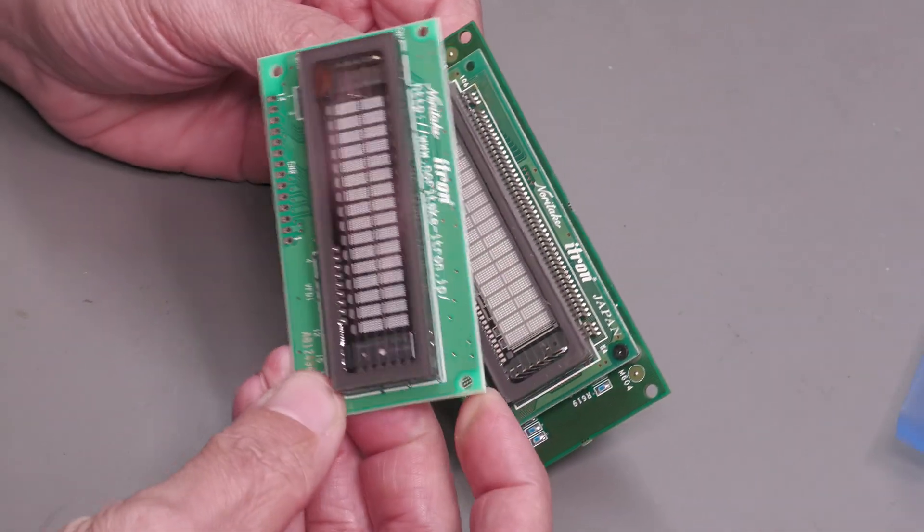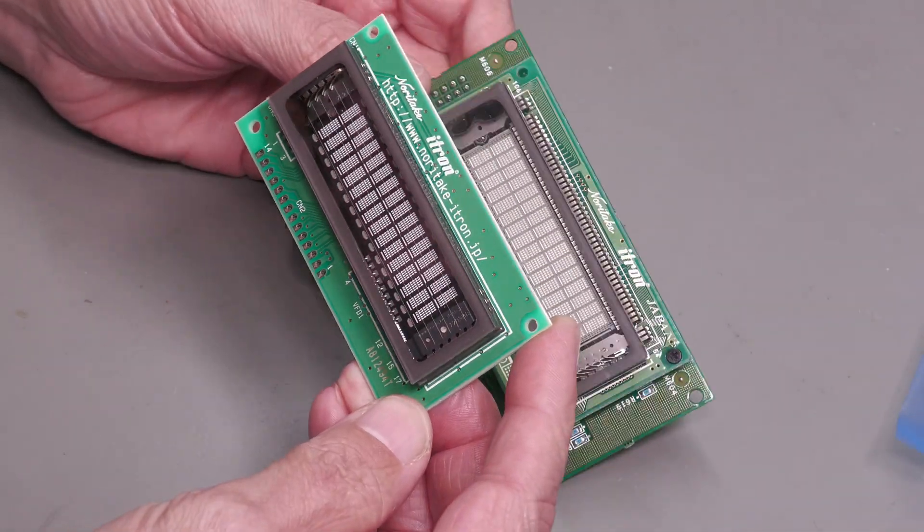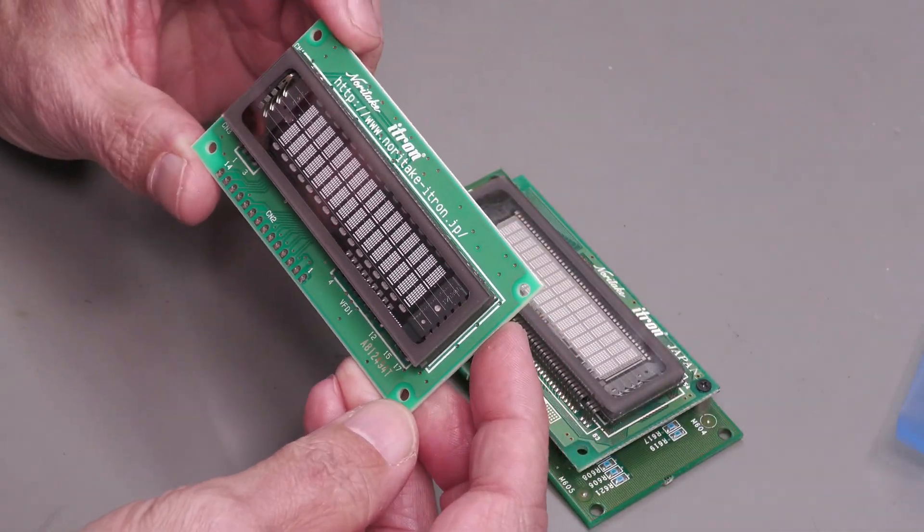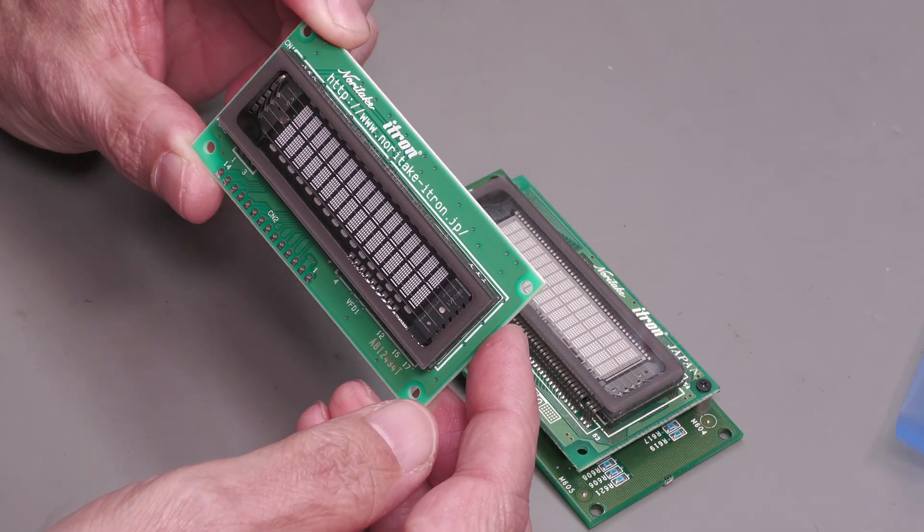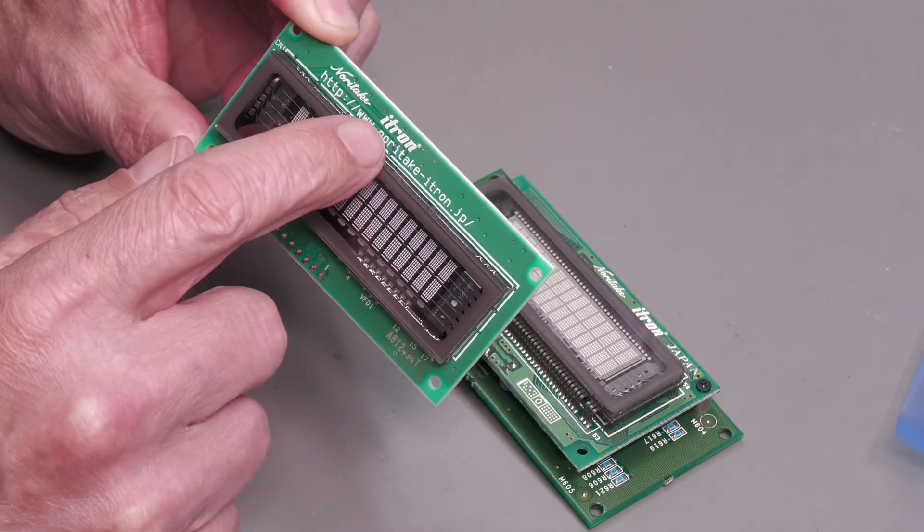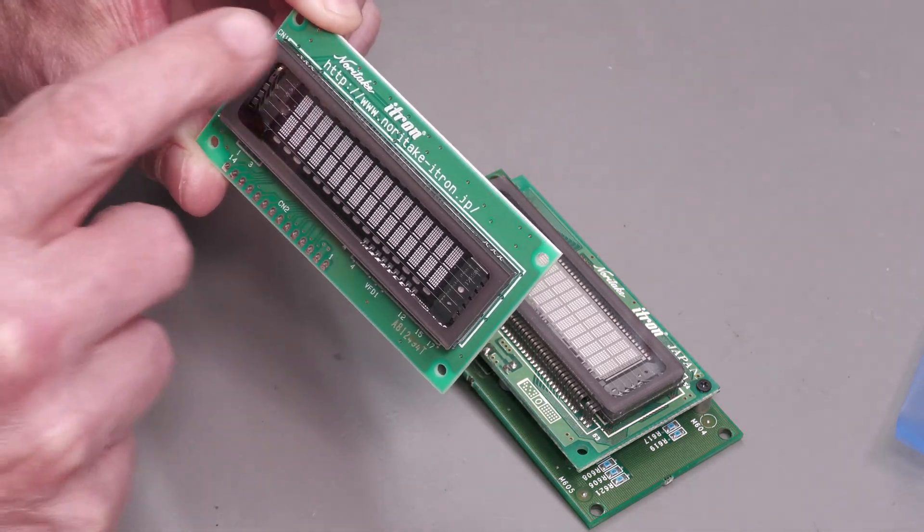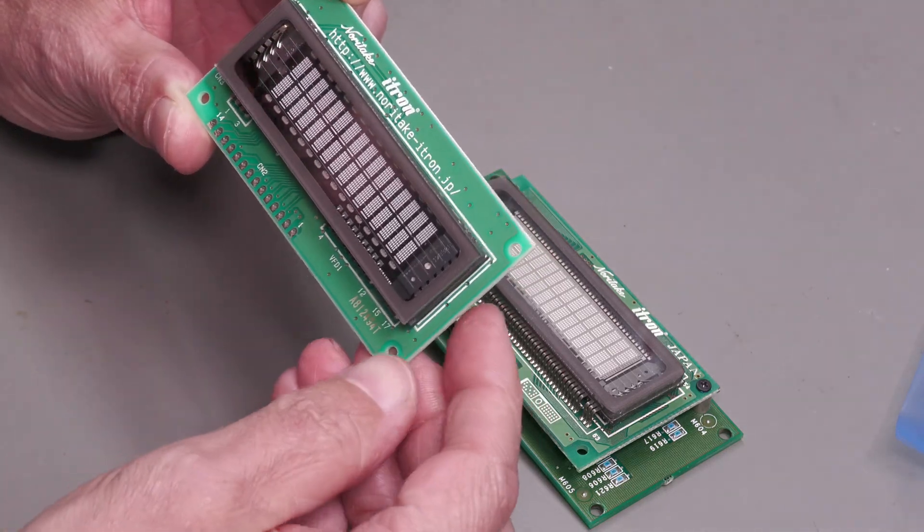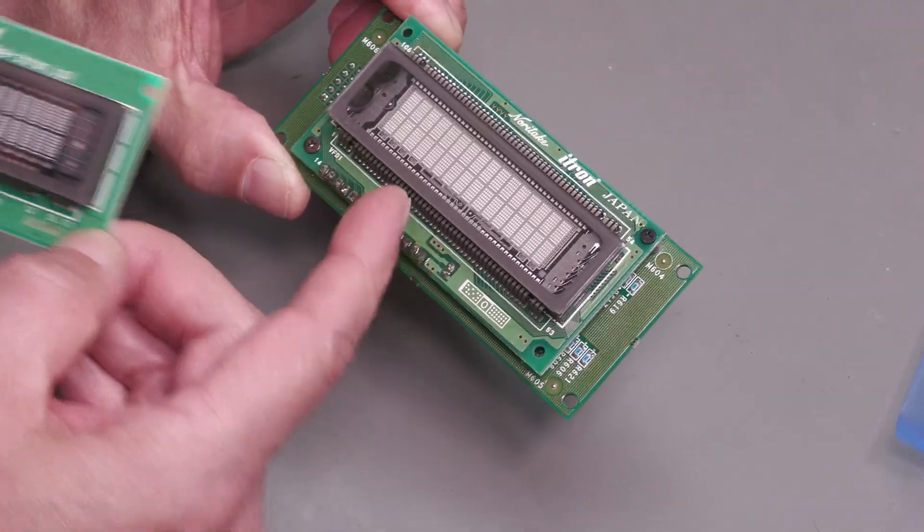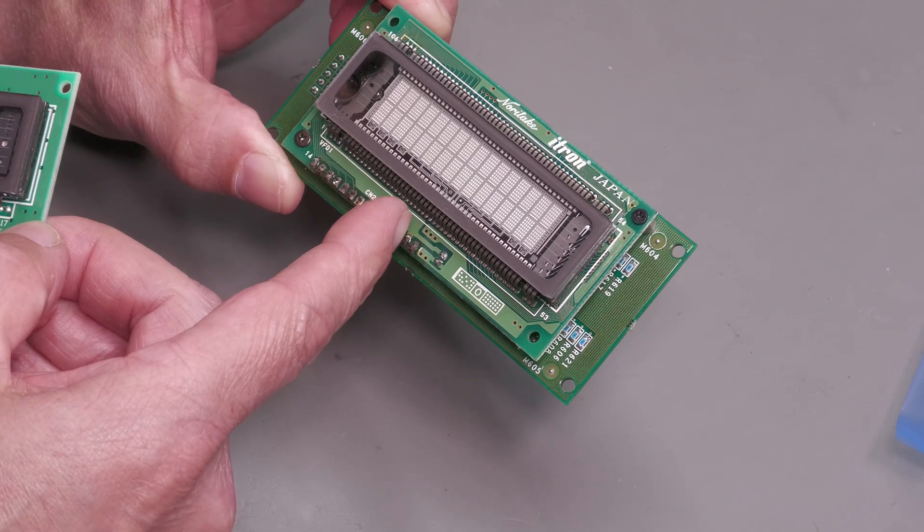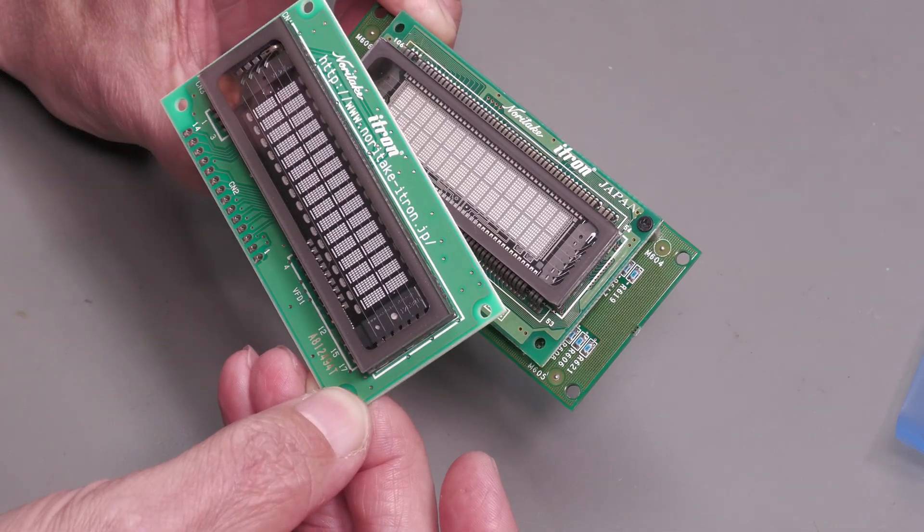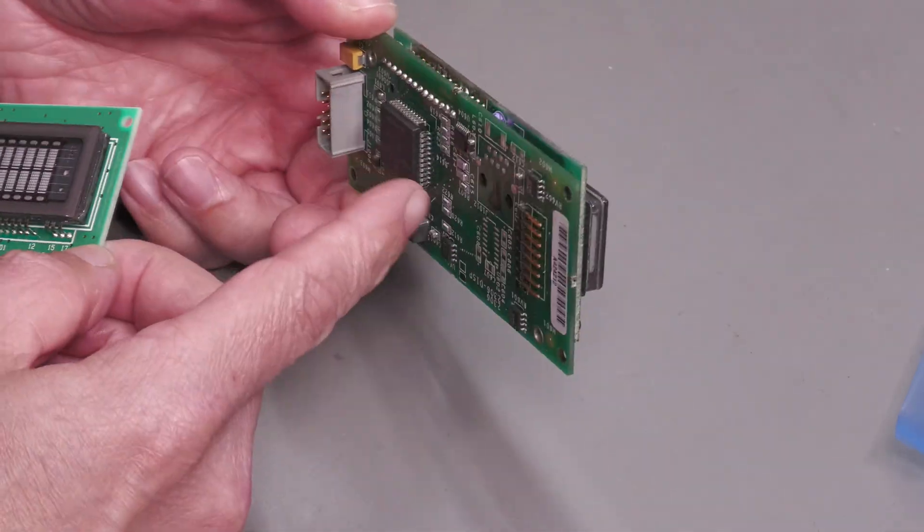But anyway, I've got myself a replacement VFD. And actually, I didn't need to go very far to acquire this one. I managed to get it from Itron itself because they've got an office in the UK. So I got this new VFD. So I'm going to de-solder this old VFD and solder in the new one in its place onto the interface board.